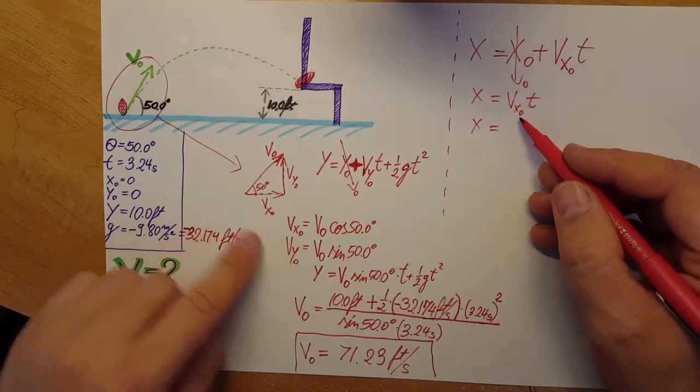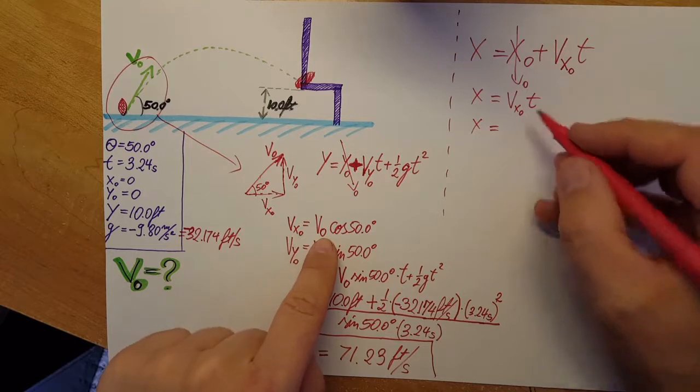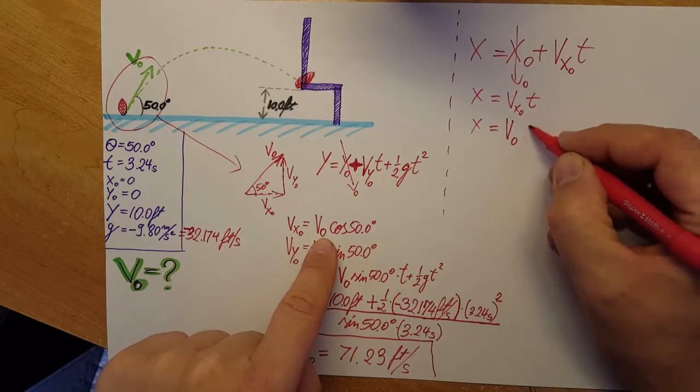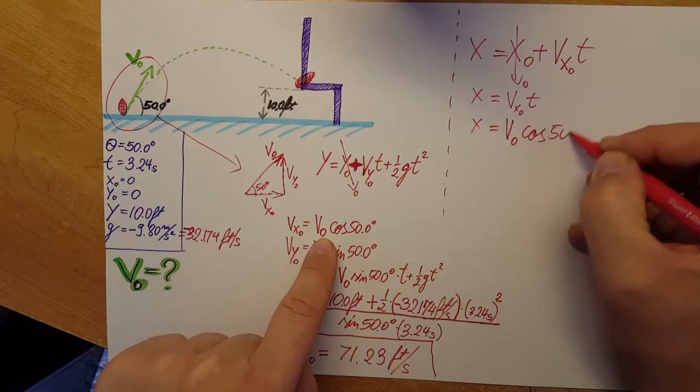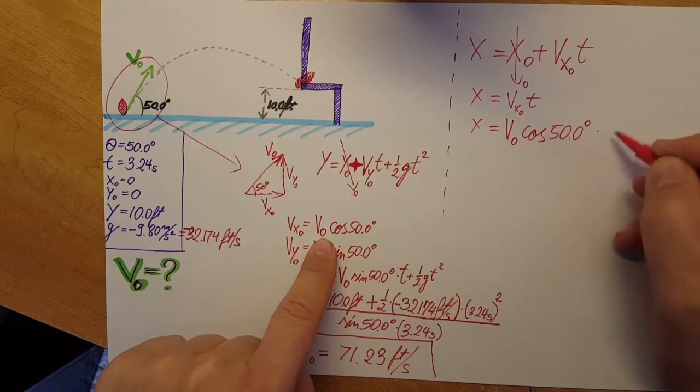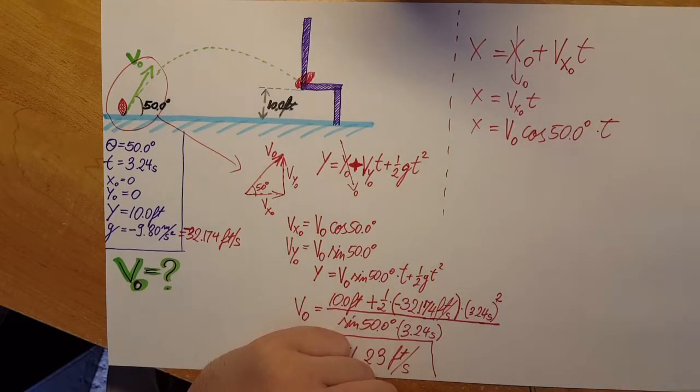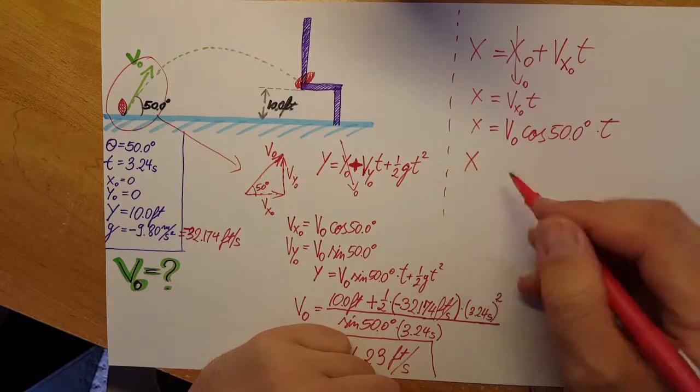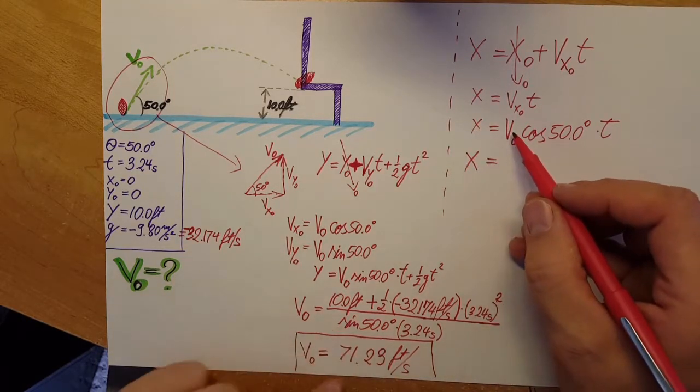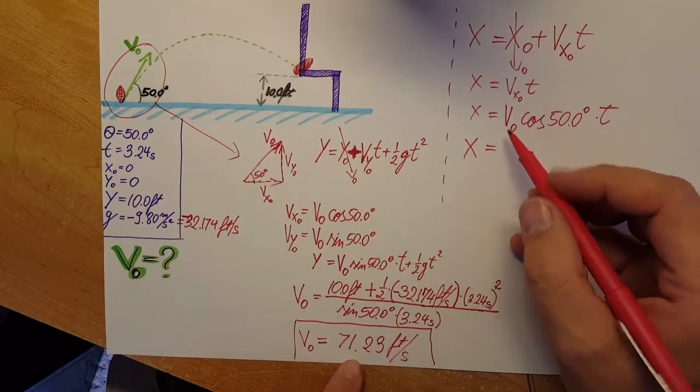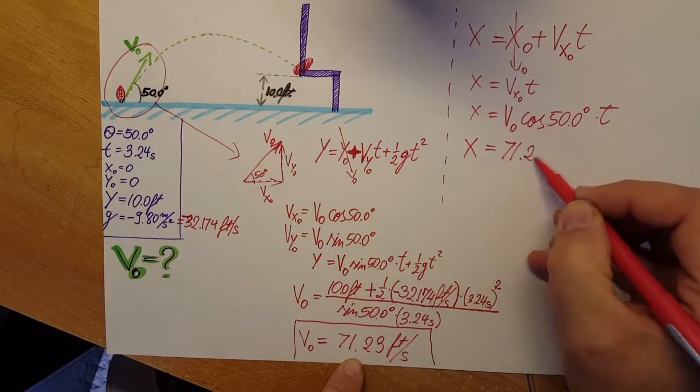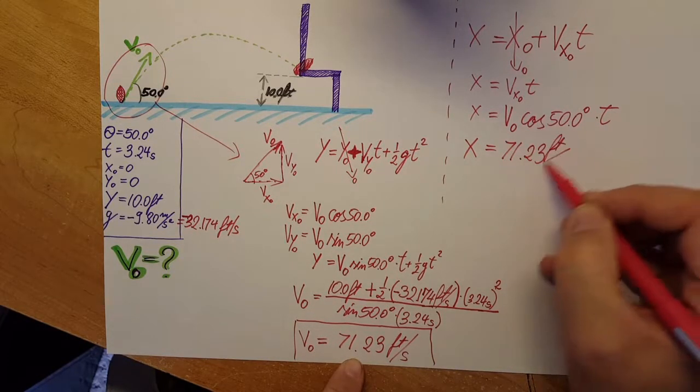So x equals v of x naught. Let's see, we had it over here and we had it written as v naught cosine 50 and then times the t, there you go.